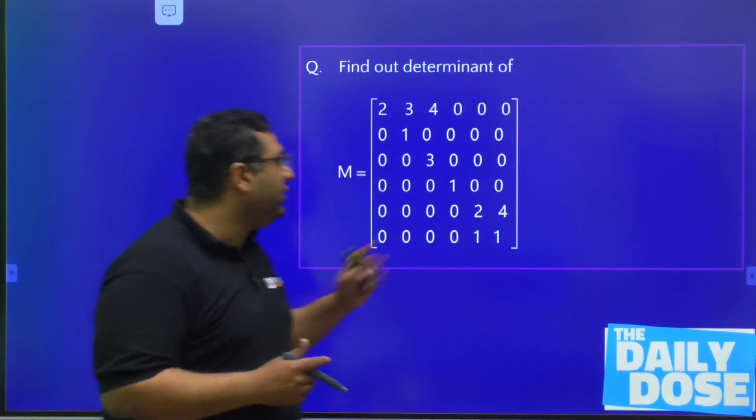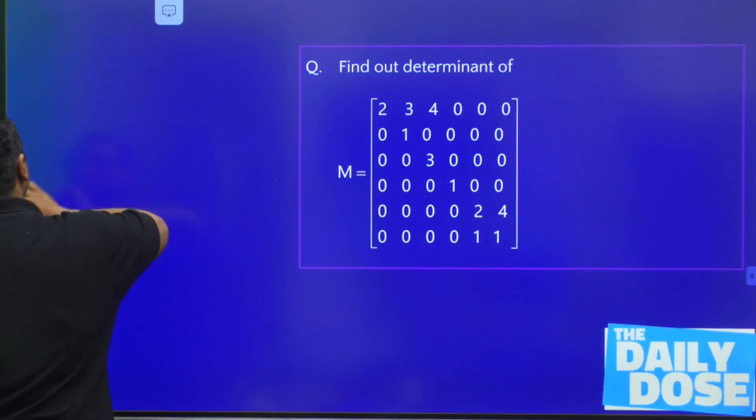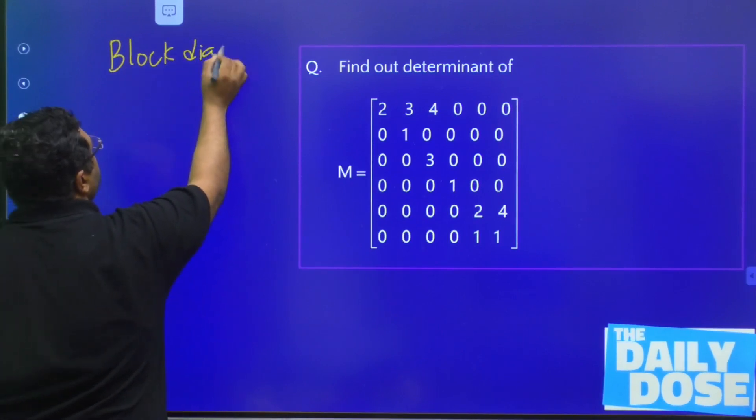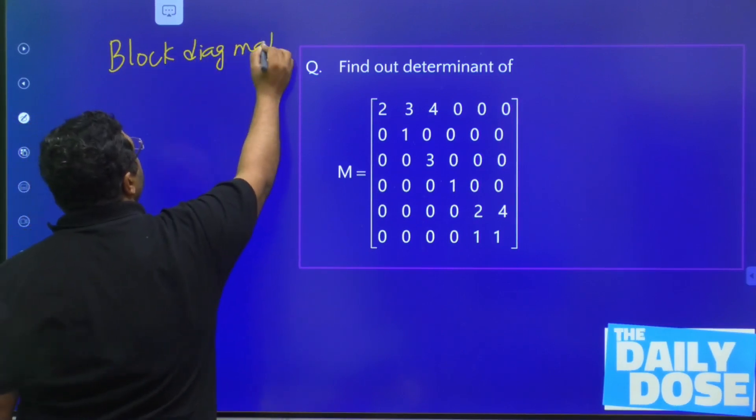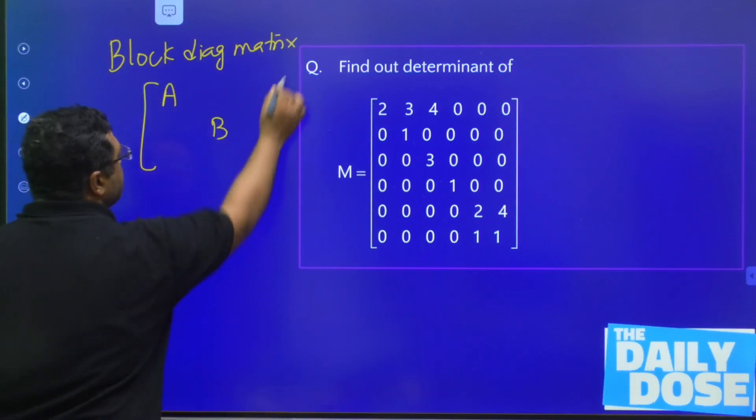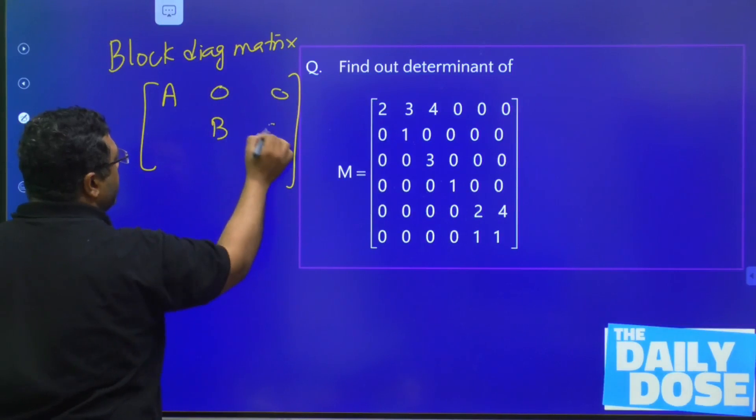So guys, when we are talking about the word block diagonal matrix, this is a kind of matrix like if we are having A, B, C, and all other entries are 0.